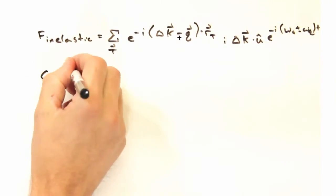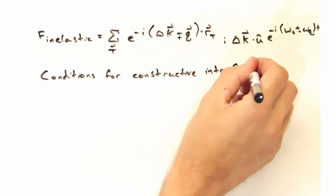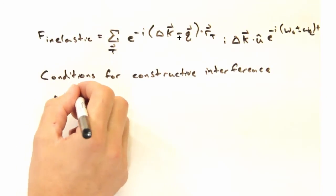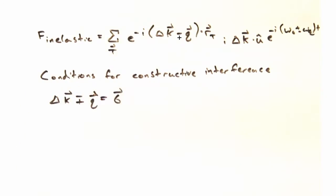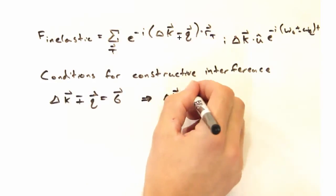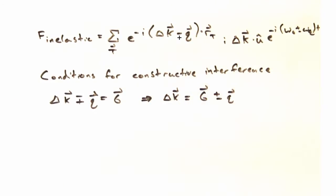We can obtain an expression for constructive interference by looking at the first exponential, where we see that delta k plus or minus q is going to be equal to g, which we can rewrite as delta k has to equal g, but now plus or minus q.